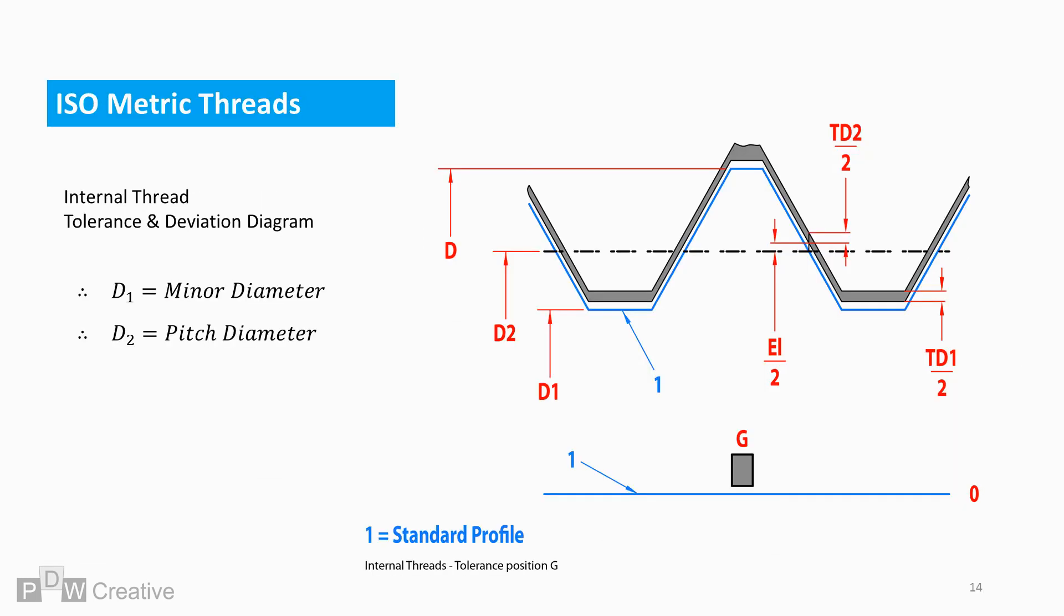Here is a diagram of the standard or basic thread profile in blue. With internal thread deviation and tolerance overlaid, EL marks the deviation for tolerance position G. The grey section marks the minor and pitch diameter tolerances applied after the position shift.